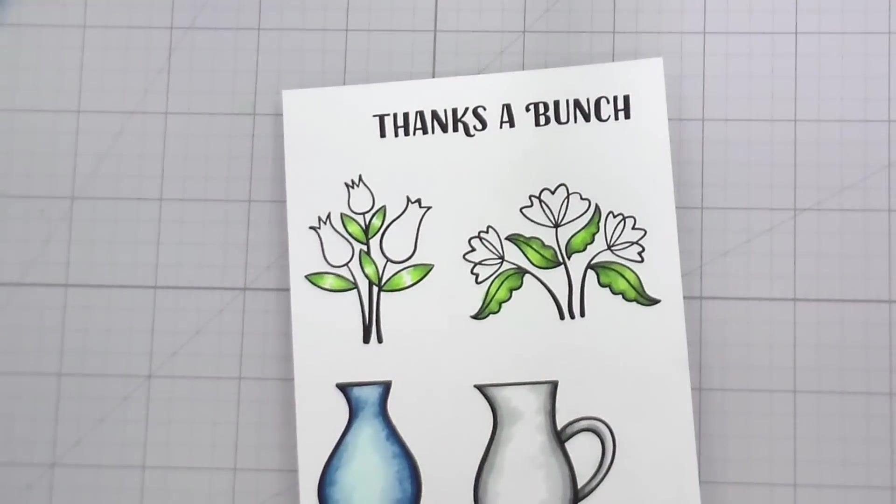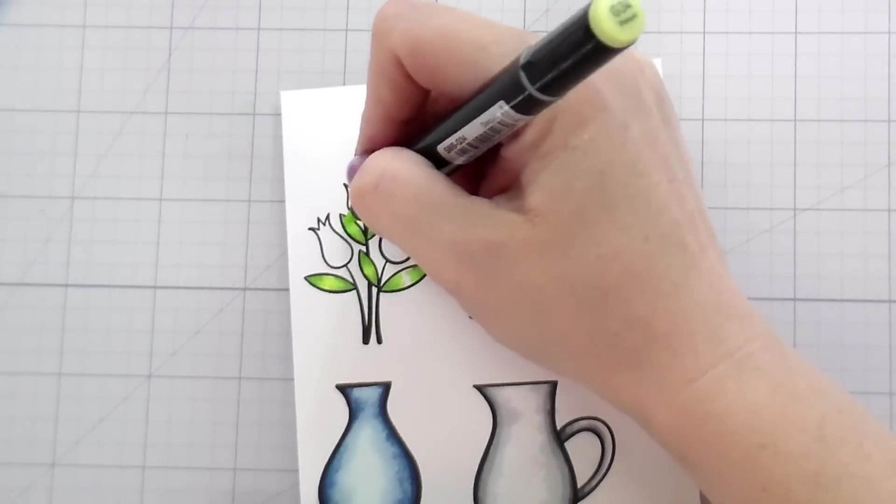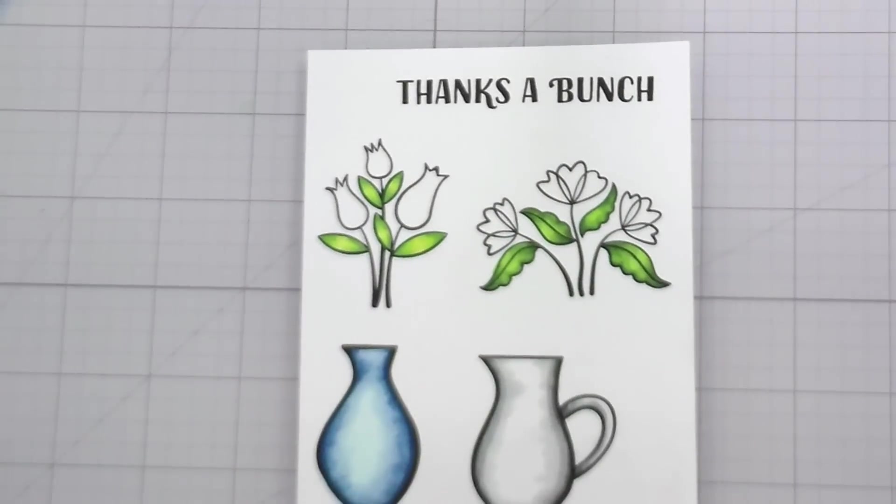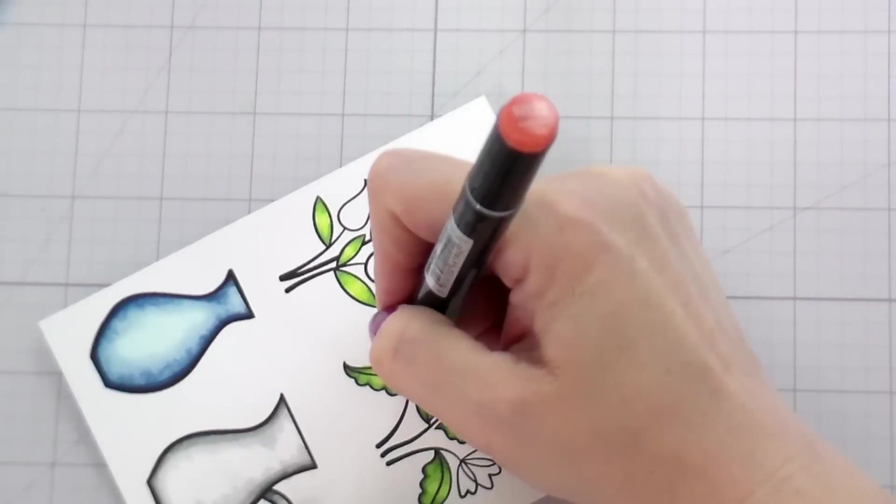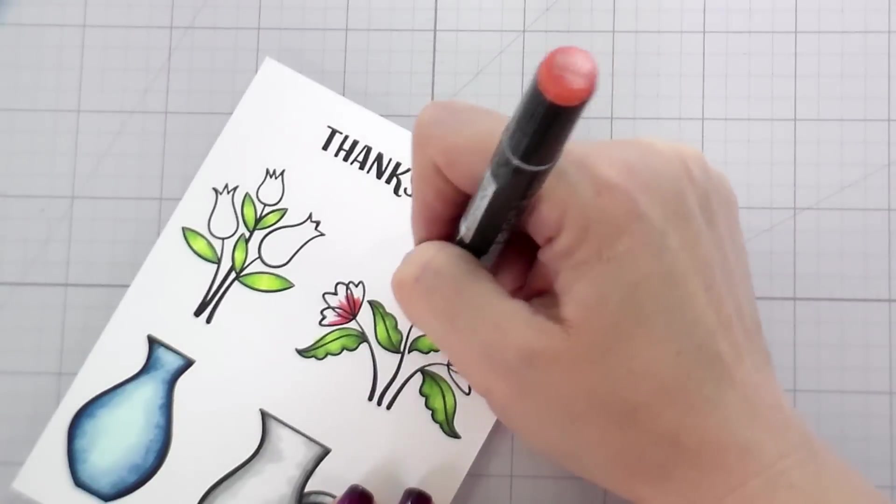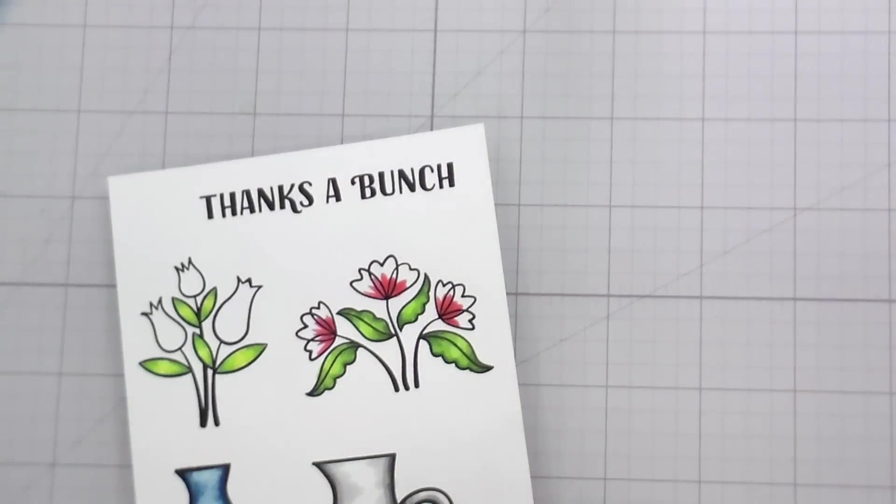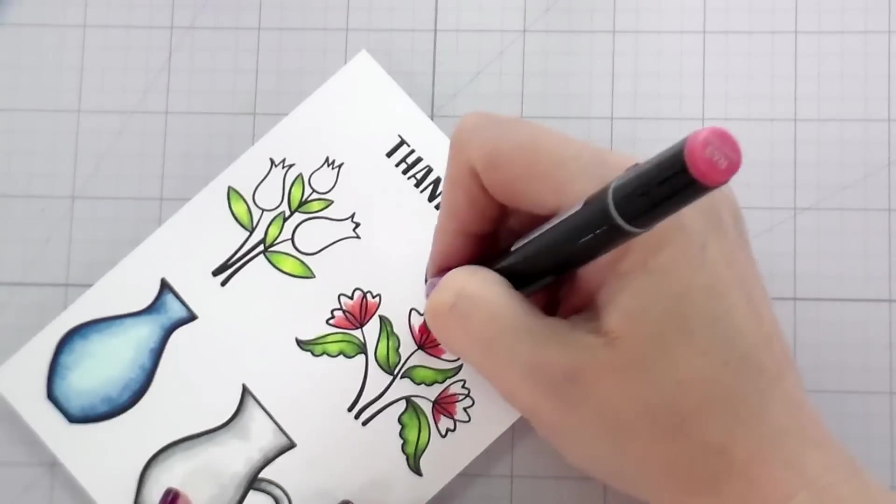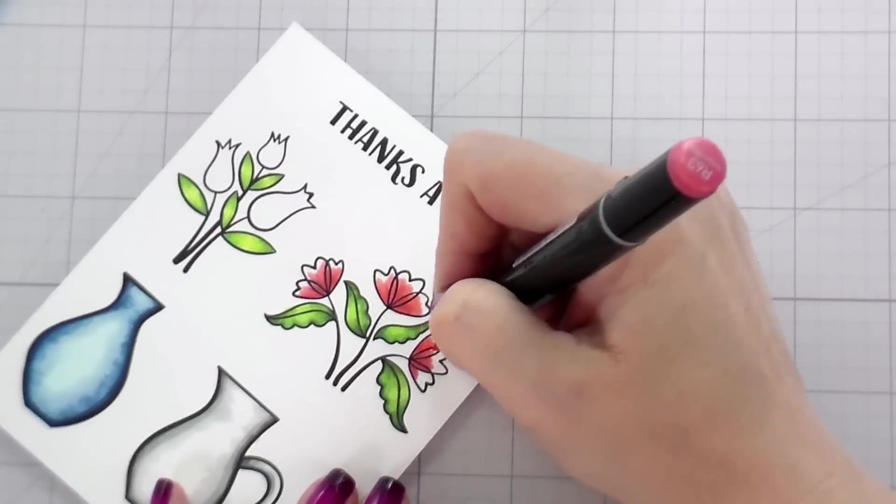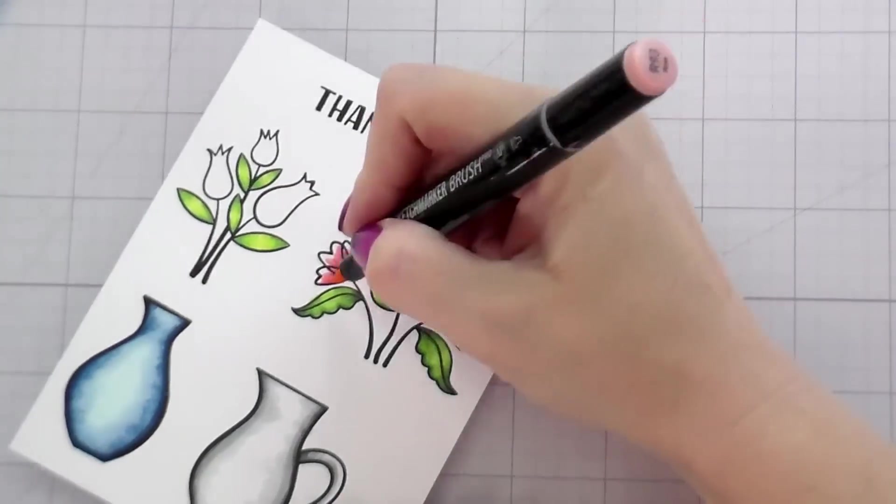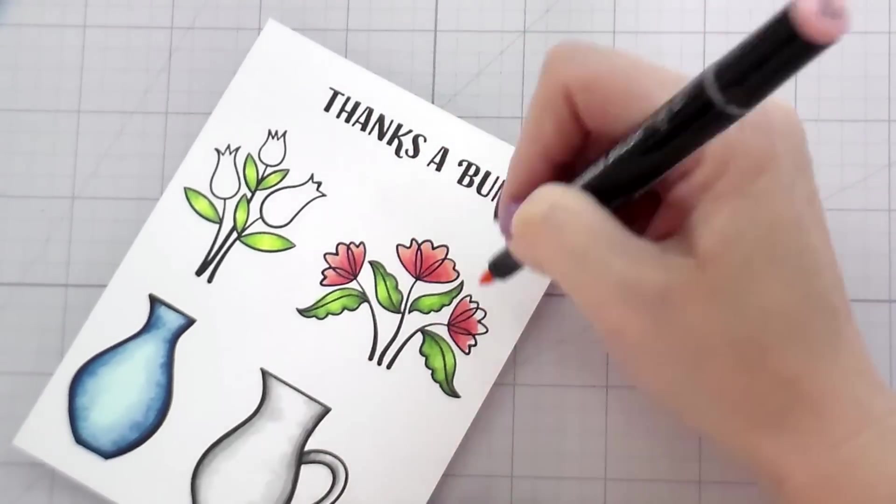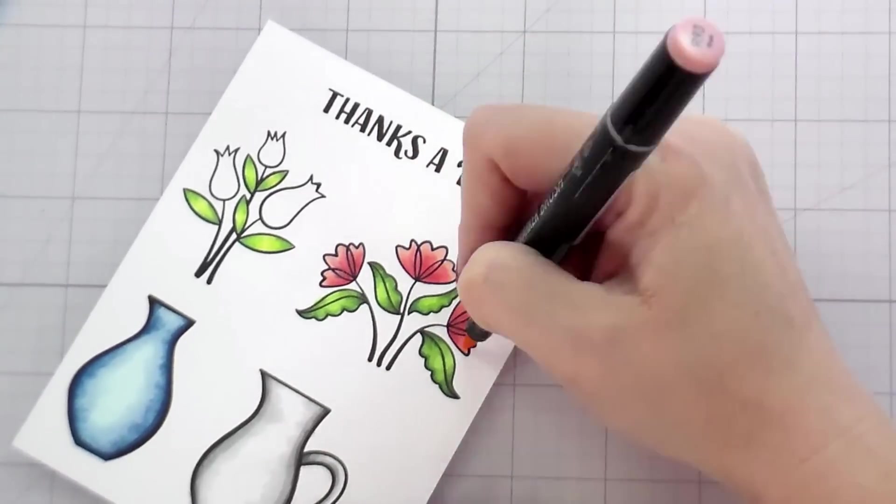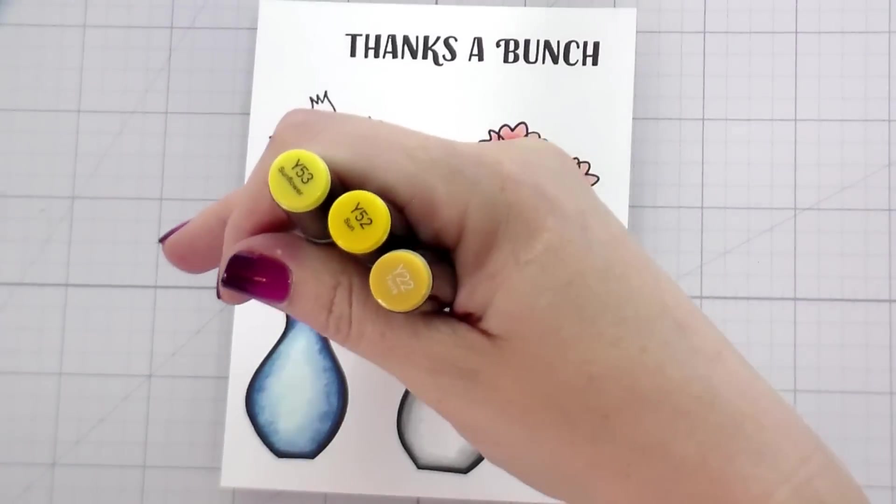I would say at this point, like, I probably use these pretty interchangeably with my Copic markers, because they are so comparable. I just, I think I'm just a little bit more comfortable with the Copic markers only because I know them so well. And I know what my color combinations are. So, you know, when I'm thinking of a color combo or whatever, like, I automatically think about it in terms of Copic colors. So I just have to get more familiar with the other ones.